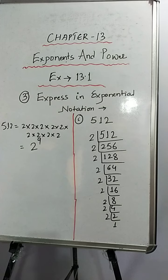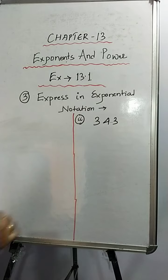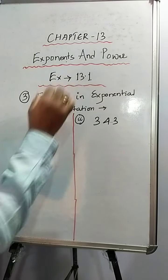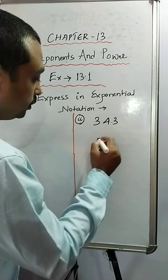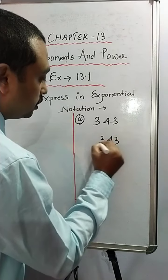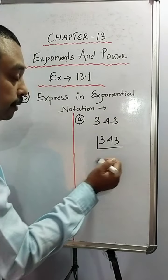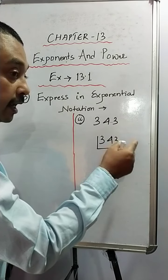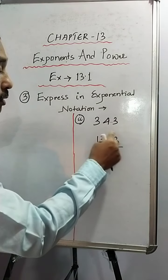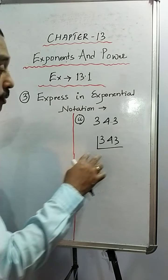So let's move on to sum number 2 of question number 3. Sum number 2, we have 343. Now we have to do the prime factorization of 343. Now, it is divisible by 2? No. It is divisible by 3? 3 plus 4 is 7, 7 plus 3 is 10. 10 is not divisible by 3, so this number is also not divisible by 3.